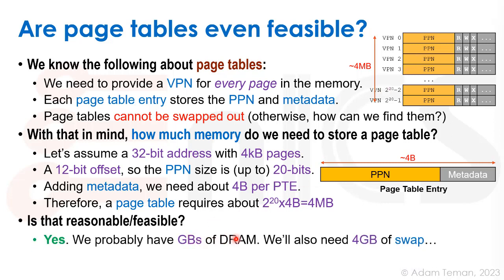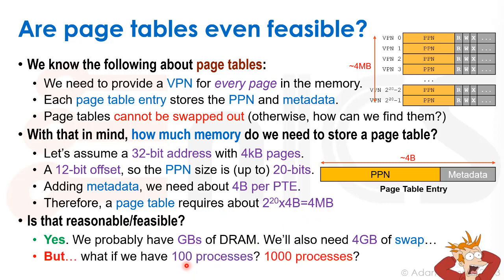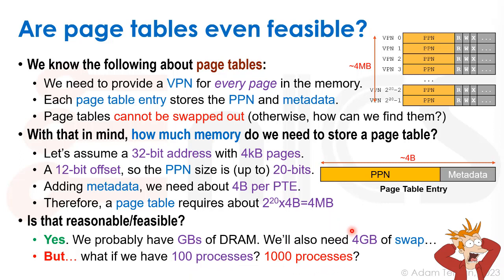Is four megabytes reasonable? We probably have gigabytes of DRAM, so four megabytes seems fine — but what if we have a hundred processes or a thousand processes? That's going to take up all our memory just storing the page tables, without even storing the pages themselves. So this is a real problem, and maybe everything we discussed before is infeasible and cannot be done.